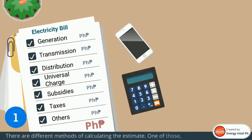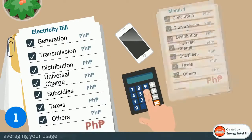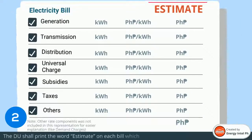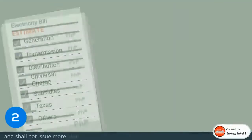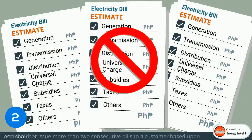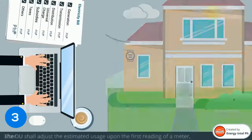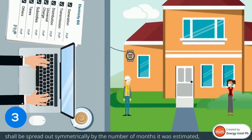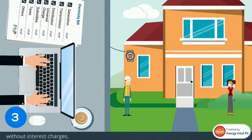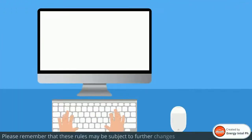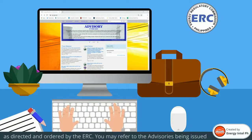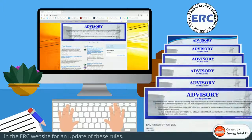There are different methods of calculating the estimate — one of those is through averaging your usage during the preceding 3 months. The DU shall print the word 'estimate' on each bill based on estimated usage, and shall not issue more than 2 consecutive bills based upon estimated usage. The DU shall adjust the estimated usage upon the first reading of a meter after an estimated reading. Billing adjustment following estimated usage shall be spread out symmetrically by the number of months it was estimated, without interest charges. Please remember that these rules may be subject to further changes or suspension as directed by the ERC. You may refer to the advisories on the ERC website for updates on this rule.